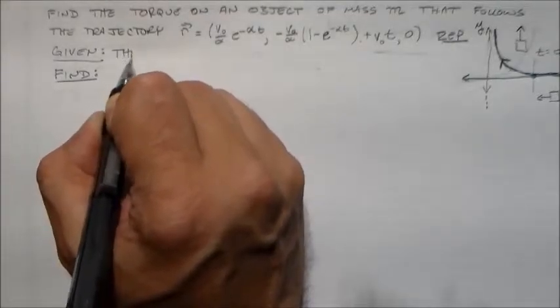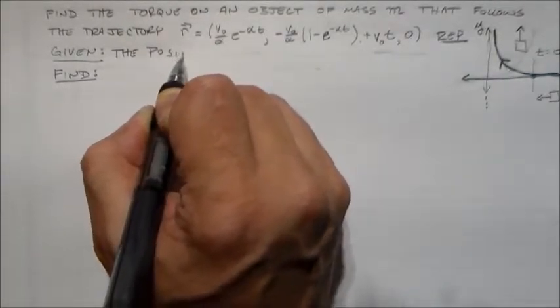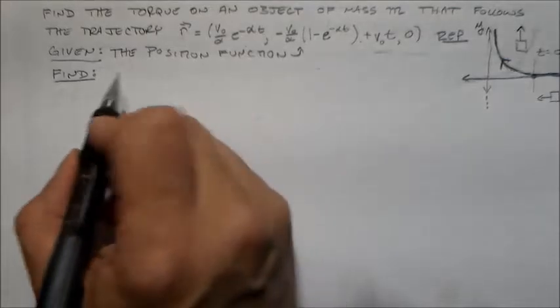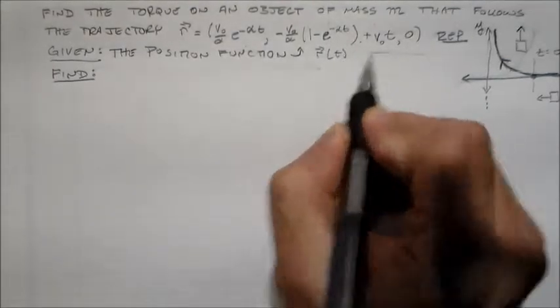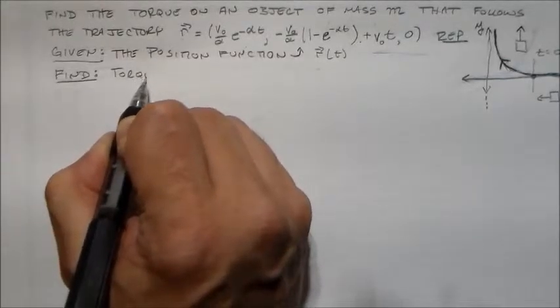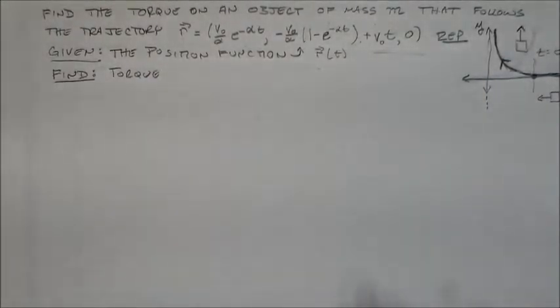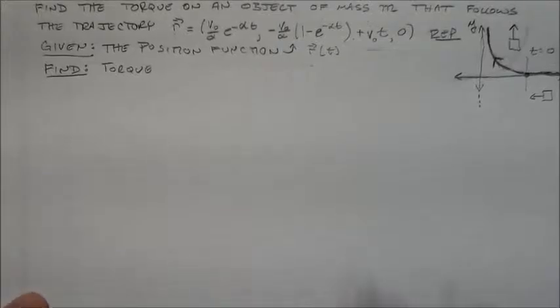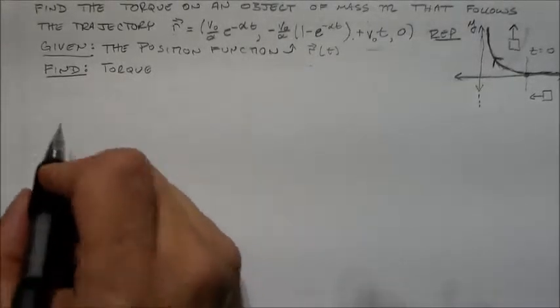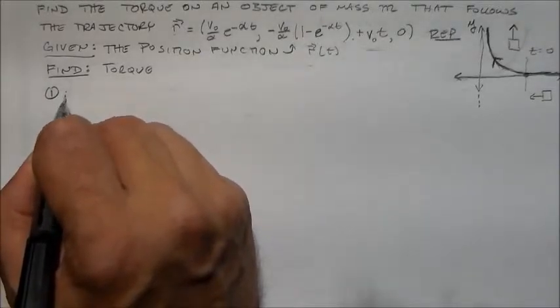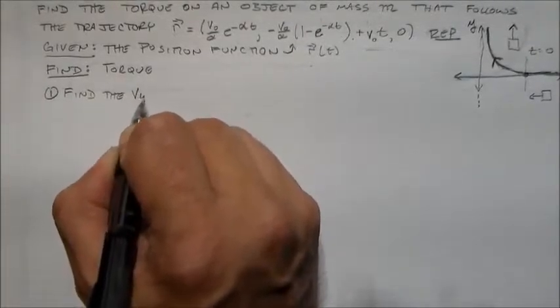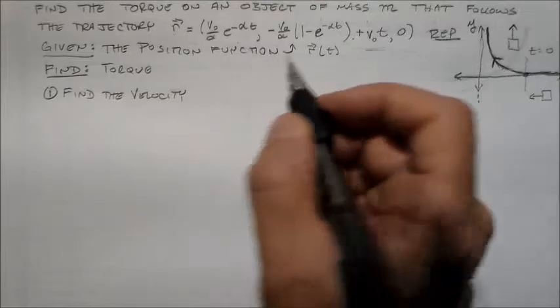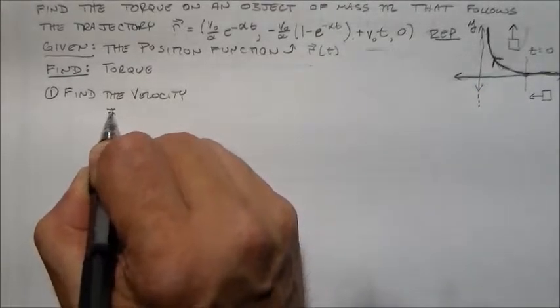And so if I'm given the position function, which is this vector function here as a function of time, we get the position RT. What I want to do is I want to find the torque on this thing. Let's find that velocity. If you find the velocity, you need to take that first time derivative.